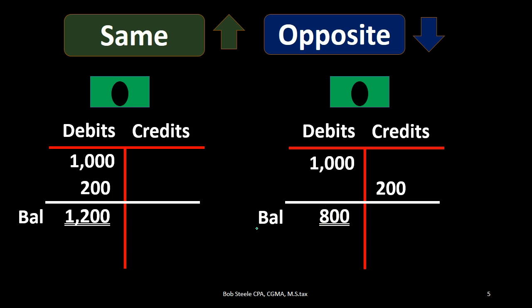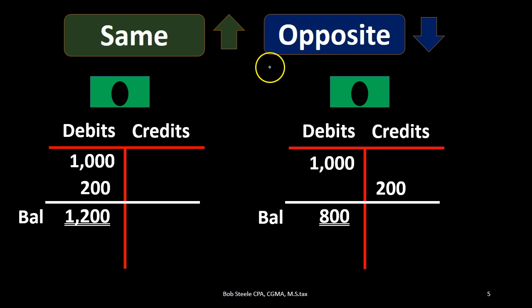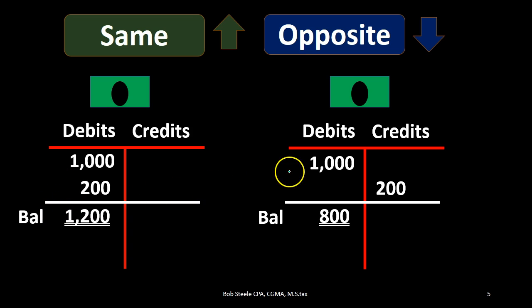Because we deal with cash so much, it's possible to learn an incorrect rule: that debits always make something go up and credits always make something go down. That is not the one rule. The one rule is: the same thing makes it go up, the opposite thing makes it go down. If the normal balance is a debit, then a debit makes it go up and a credit makes it go down. But if we apply this to a credit balance account, the opposite will be true.